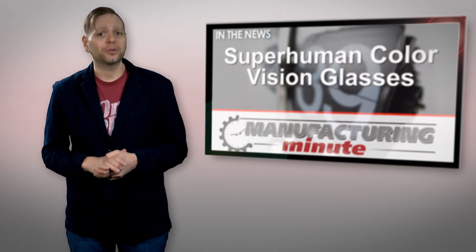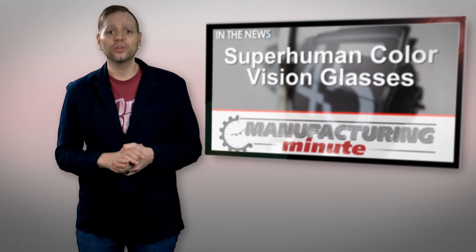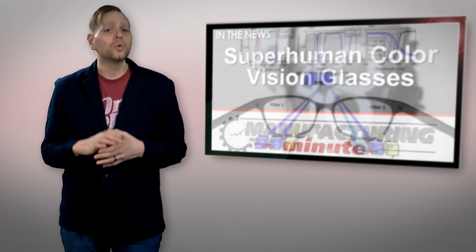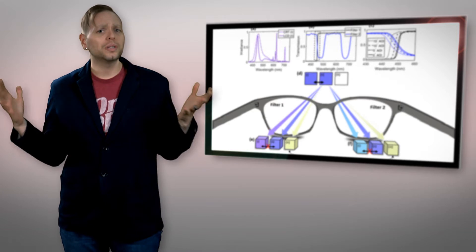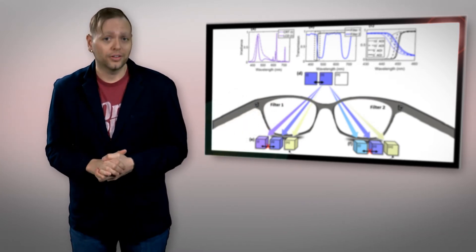But that may change soon after Michael Katz, an assistant professor of engineering and computer sciences at the University of Wisconsin-Madison, asked the question: how can we see more? The answer might be special glasses that give people superhuman color vision.